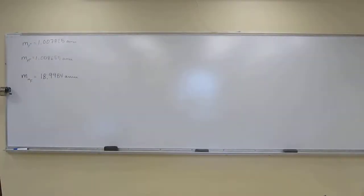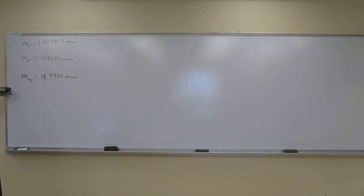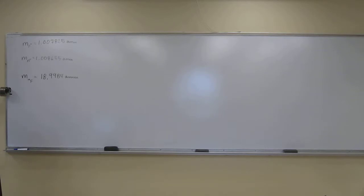This is a nuclear binding energy problem. This one in particular says the atomic mass of fluorine-19 is 18.9984 AMU. Calculate the nuclear binding energy of this nucleus, the corresponding nuclear binding energy per nucleon, and the nuclear binding energy per mole of fluorine-19 atoms.